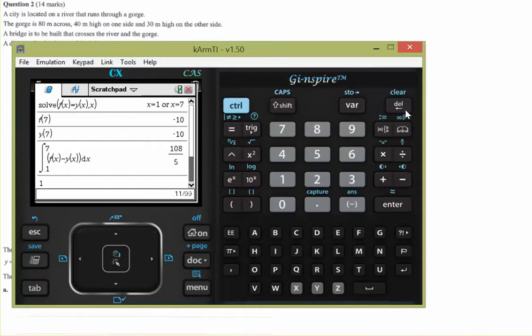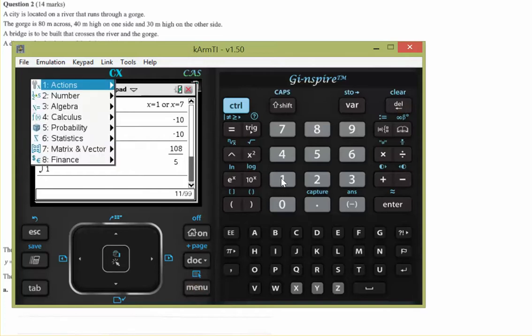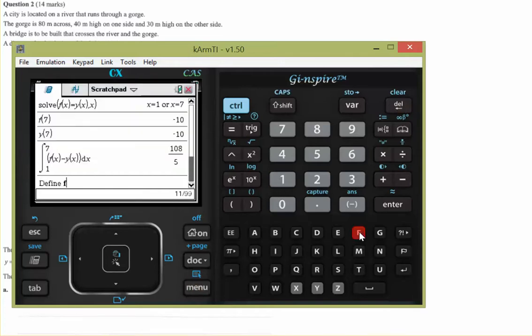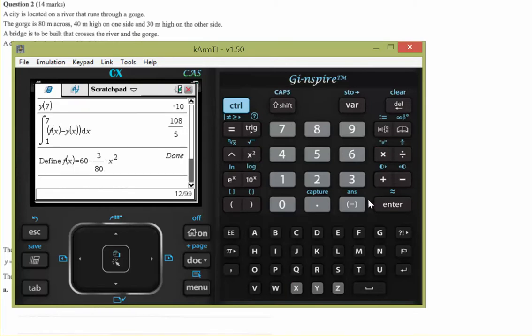When you define a function with the same name as a previous one, it just overwrites it. I want f(x) to be something else now. That's okay, it'll overwrite it. So, 60 minus 3 over 80 times x squared. There's our function.